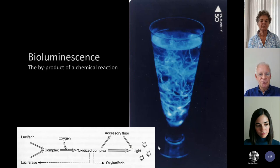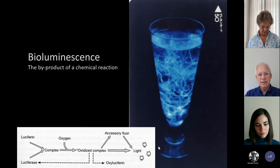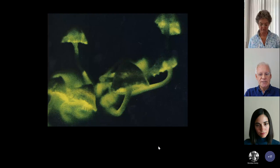Bioluminescence is the result of a chemical reaction. When luciferin and luciferase react in the presence of oxygen, light is produced as a byproduct — and no heat in this case, so it's often called cold light. This is a type of colour in nature produced when there's no sunlight, such as in the deep sea, at night, or in caves. In marine environments a lot of bioluminescence tends to be blue, whereas on land it tends to be green or yellow-green.